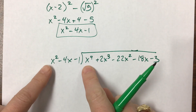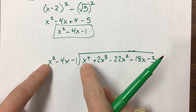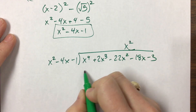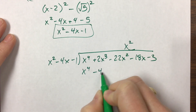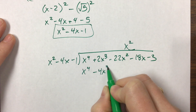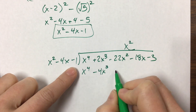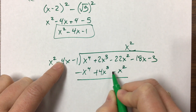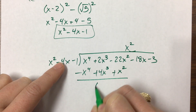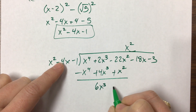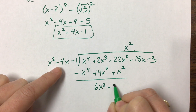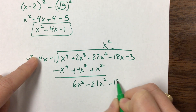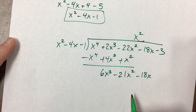x to the fourth divided by x squared gives me x squared. Multiply that back. I have 4x cubed — that's minus x squared. Change my signs, that's gone. This becomes 6x cubed, and that becomes minus 21x squared. Then I can bring down that next term because I'm likely to need it.